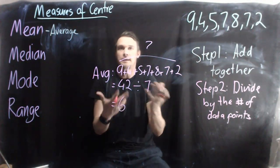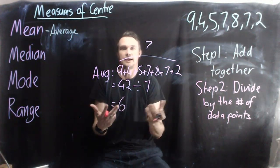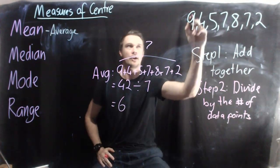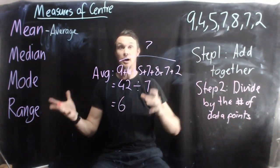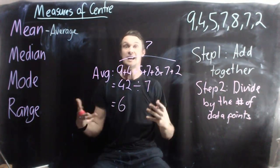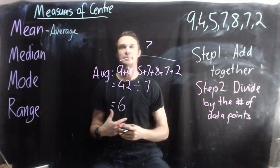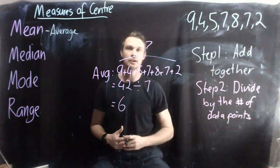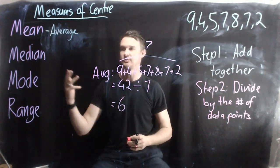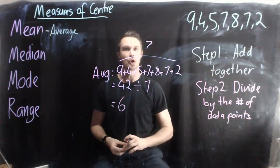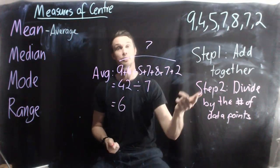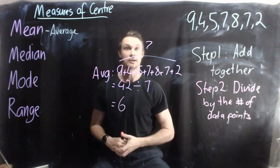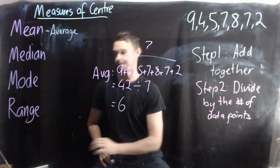Now I can do something with my average. I've got an average of 6, so I know which players are above average or below average, and now I can work with something. This is what we call the measures of centre. In the next few videos, we're going to look at the other parts — median, mode, and range. Make sure you have all those points jotted down, and we'll continue this in class. Thanks, guys.